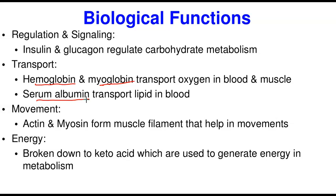Seventh, movement: actin and myosin constitute the muscle filament and perform the role of movement and locomotion. When you move your forearm, what helps you do that is actin and myosin. Eighth, energy: proteins are broken down to amino acids, which are further broken down to keto acids. The amino group is removed as ammonium and excreted as urine, while the keto acids are further broken down to generate energy in both the glycolytic and citric acid pathways.